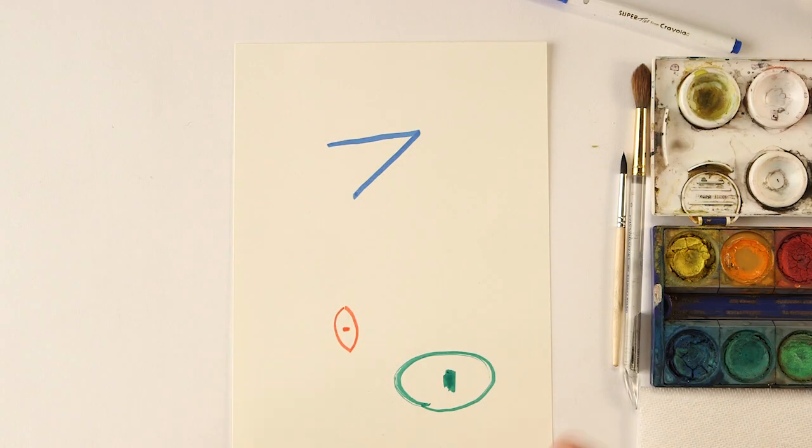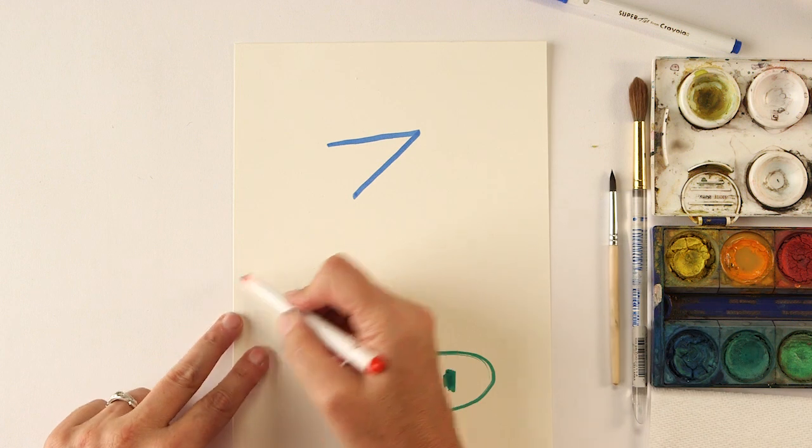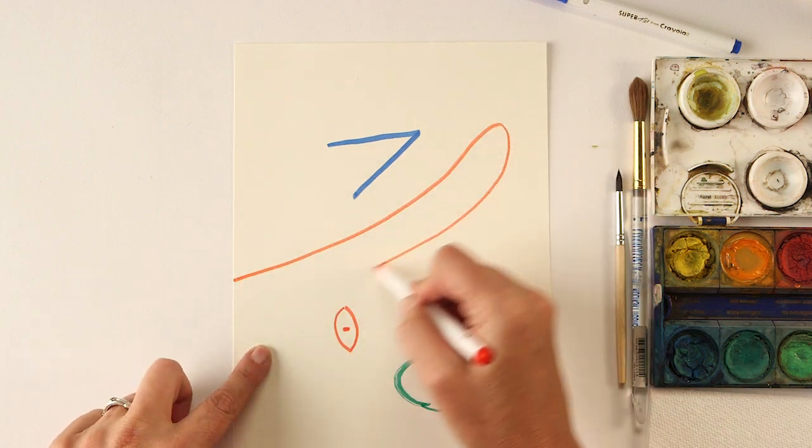The next one is a tail. So a tail anywhere on the page. And you can connect it with something you already have, or you can just have it floating wherever you want. It could even come off the side of the paper if you want.